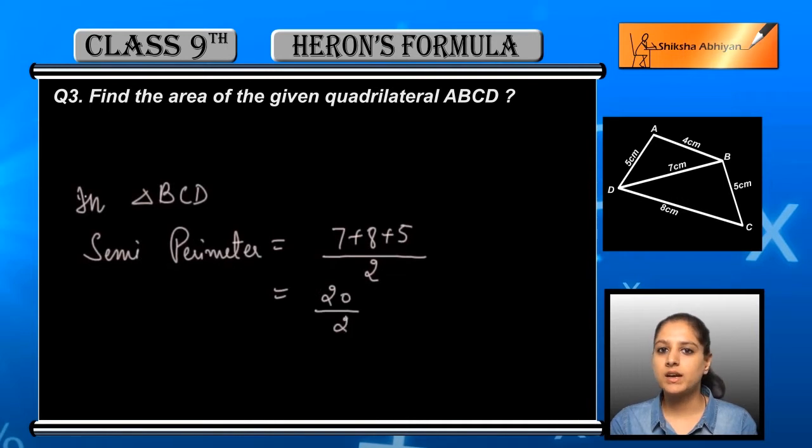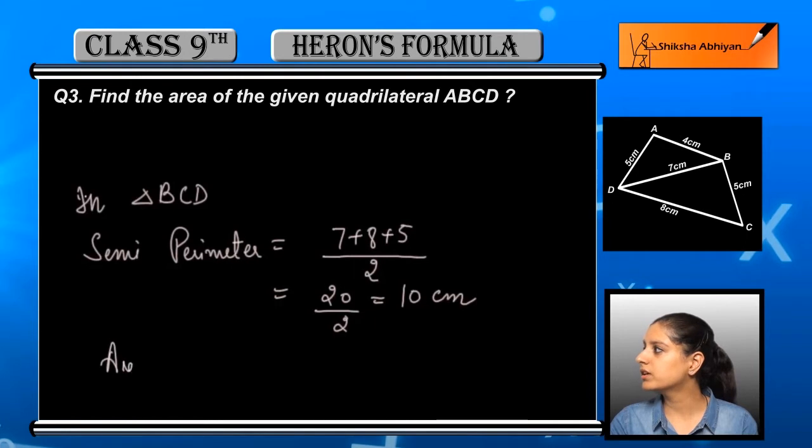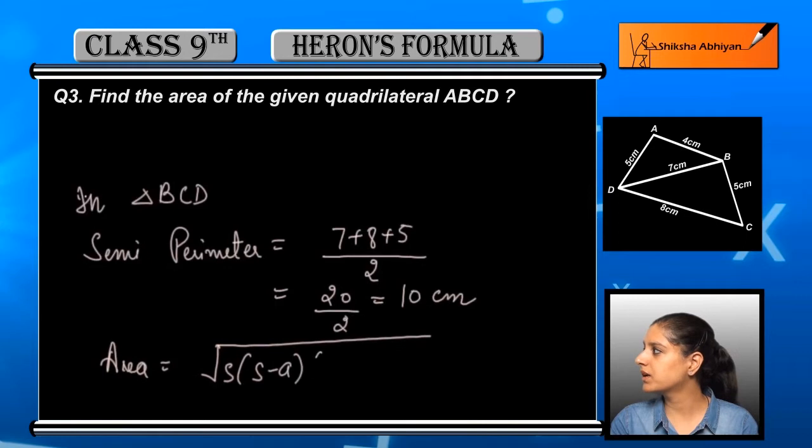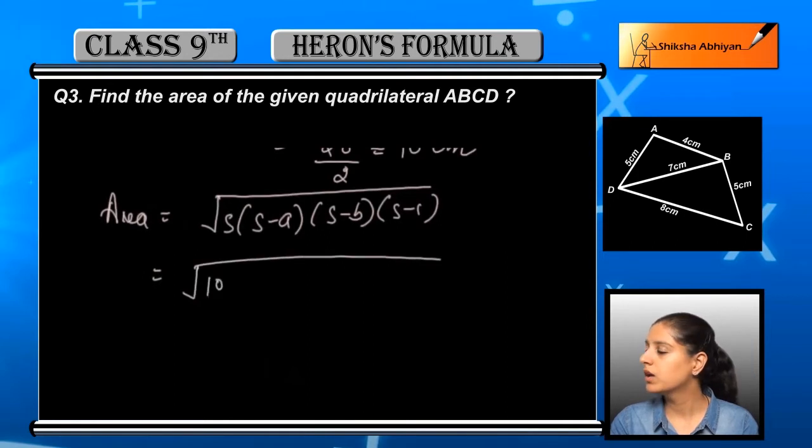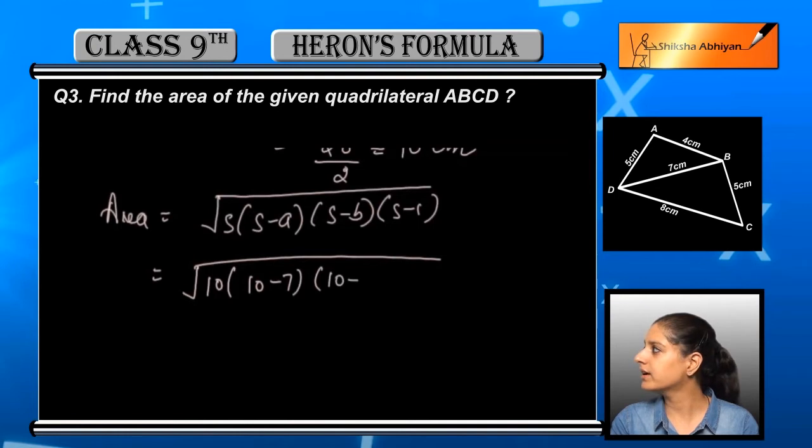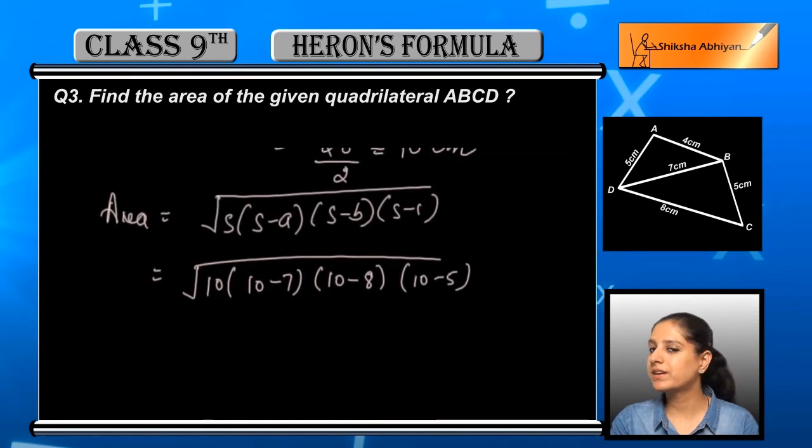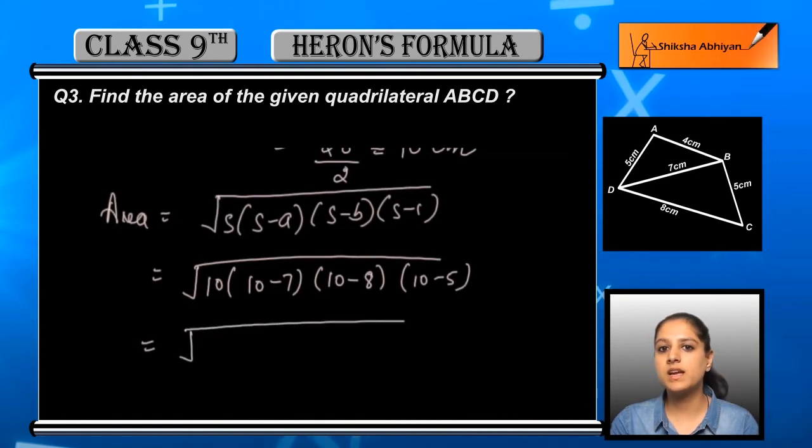Again, after finding the semi-perimeter, we will apply Heron's formula. You know that Heron's formula is equal to s into s minus a into s minus b into s minus c. Next, we will put the values of s, a, b, and c: s is 10, a is 7, b is 8, and c is 5. Further solving, we get 10 into 10 minus 7 that is 3, then 10 minus 8 that is 2, and 10 minus 5 that is 5.